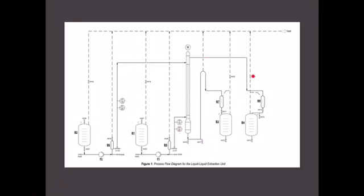The extract consists of the toluene-rich phase, which will be collected at B4, and the raffinate, which is the water-rich phase, will be collected at B3. You can collect your raffinate at the bottom of the column. The objective of this experiment is to operate a liquid-liquid extraction experiment using a rotating disk column, and to determine the height equivalent of theoretical plates, or HETP, for the column.